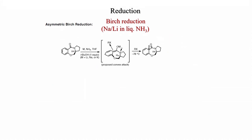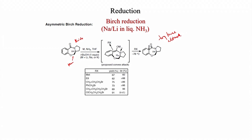Asymmetric Birch reduction is also possible. With a chiral compound bearing an amide and ether group, treatment with lithium or sodium in liquid ammonia/THF followed by tert-butanol (one equivalent) gives a conjugated enolate. Proposed convex attack: the convex side is open and alkylation occurs from the top face. With methyl iodide: 67% yield, 60% selectivity. With ethyl iodide: 82% yield with greater than 98% diastereoselectivity.